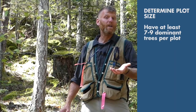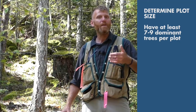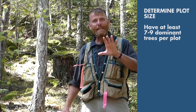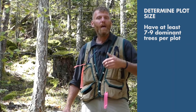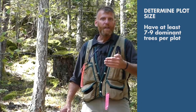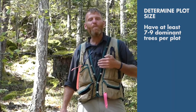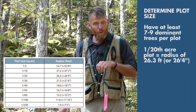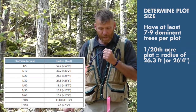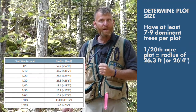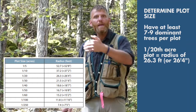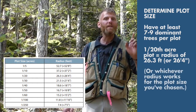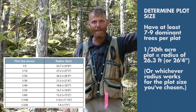So your plot could be a 1/20th acre, could be a 1/10th acre, could be a 1/5th acre — whatever gets at least 7 to 8 dominant trees. Now a 1/20th acre plot is 26.3 feet in radius from a plot center. Once you've located where you want your plot to be, you want to establish plot center, and then begin measuring out 26.3 feet and establishing the perimeter of that circular plot.